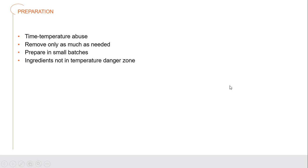Avoid time and temperature abuse during preparation. Only remove from the refrigerator as much food as you need at any given time, so food isn't sitting out for long periods. Always prepare in small batches. For example, if you need to fabricate 12 chickens, don't take all 12 out simultaneously and let them sit while you work — take them out one at a time, and return pieces to the refrigerator as you finish. It may be slightly less time-efficient, but keeping food safe is far more important.